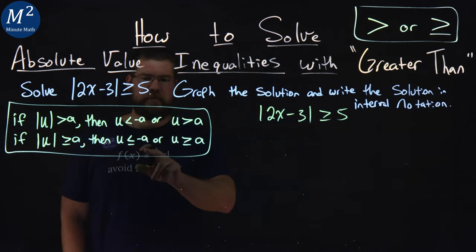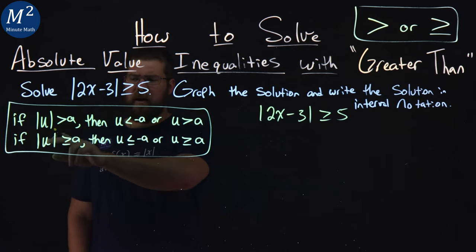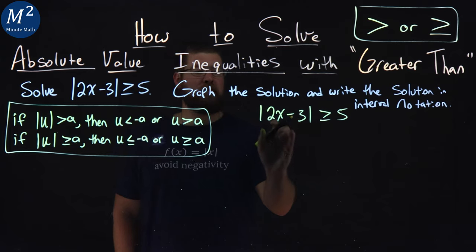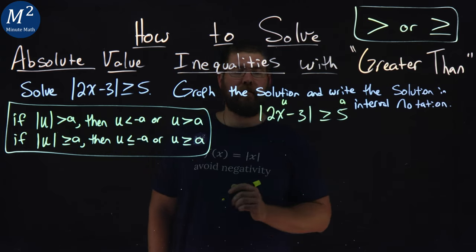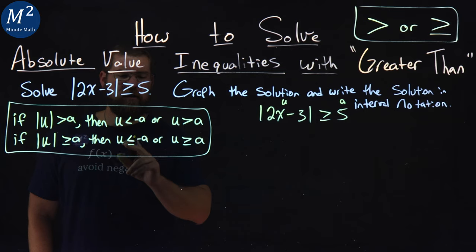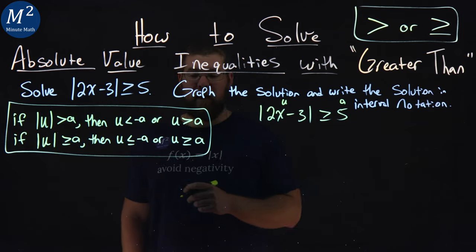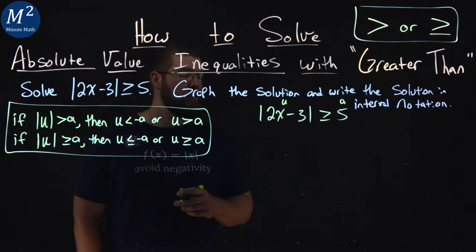We're going to use our rule here, specifically the second one. If absolute value of u is greater than or equal to a, which we have—our u value is 2x minus 3—then u is less than or equal to negative a, or u is greater than or equal to positive a.